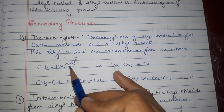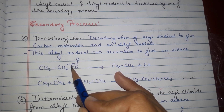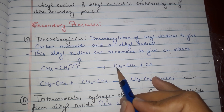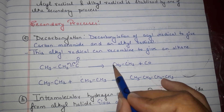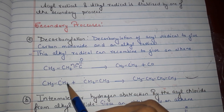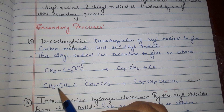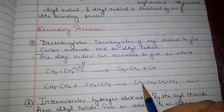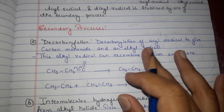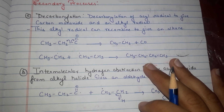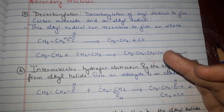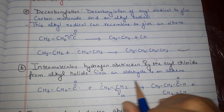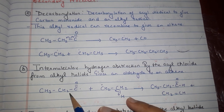In decarbonylation, for CF₃CF₂CO acyl chloride, there is cleavage of the alpha bond, forming CF₃CF₂ plus CO. Then CF₃CF₂ combines again with another CF₂CF₃ to form a simple alkane chain. The second step is intermolecular hydrogen abstraction by the acyl radical.